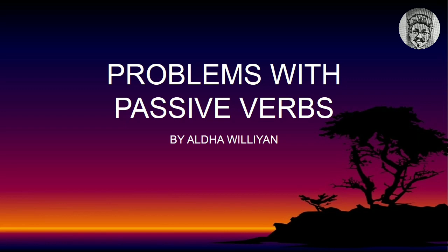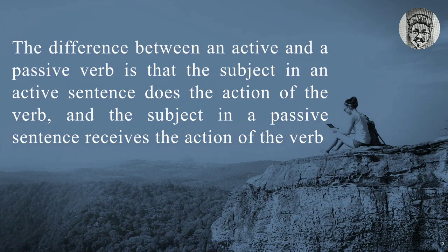Let's begin our discussions. The difference between an active and a passive verb is that the subject in active sentences does the action of the verb, and the subject in a passive sentence receives the action of the verb. That is the difference between active and passive. This rule also works in English.